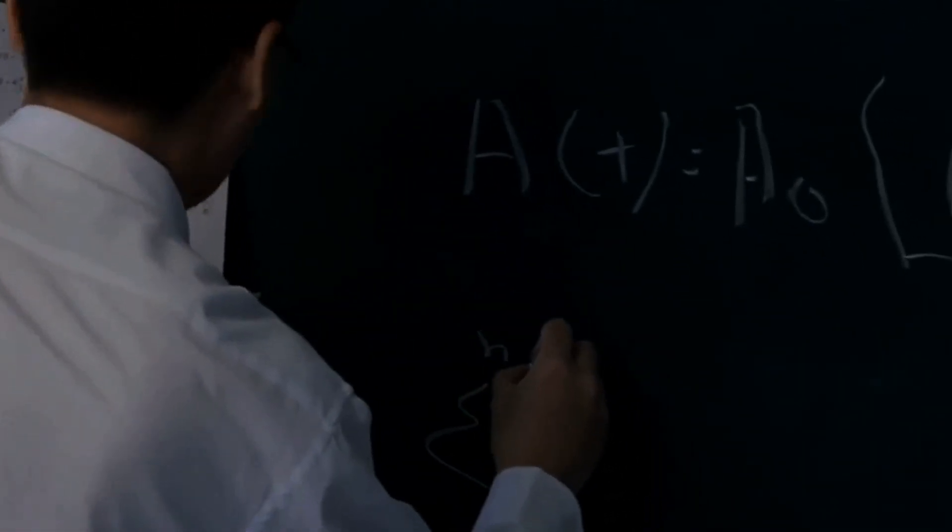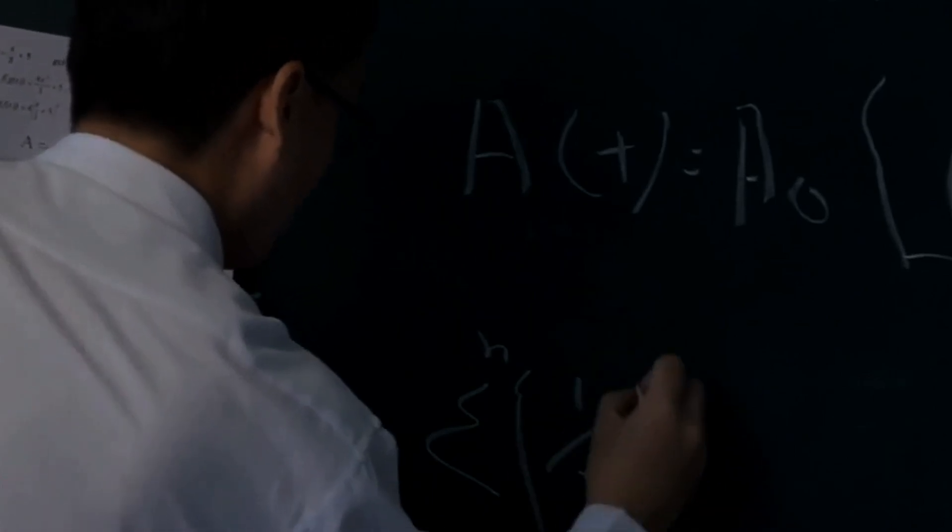In 1904, Henri Poincaré posed a fascinating question. Does an analogous statement hold true for three-dimensional shapes? This question became known as the Poincaré conjecture.